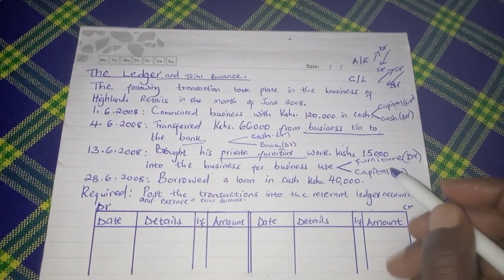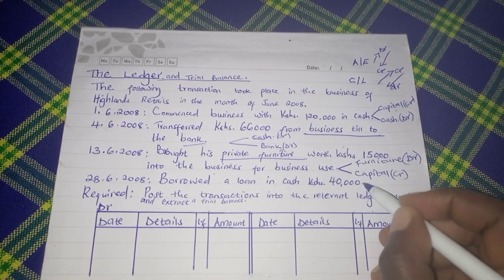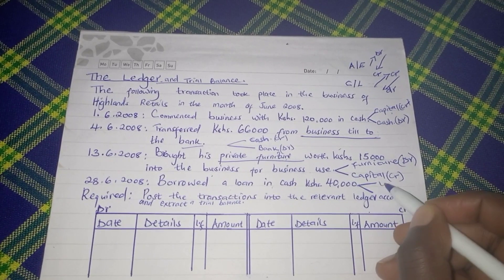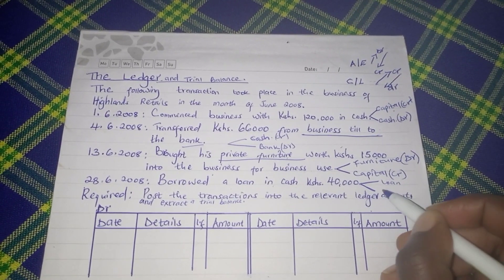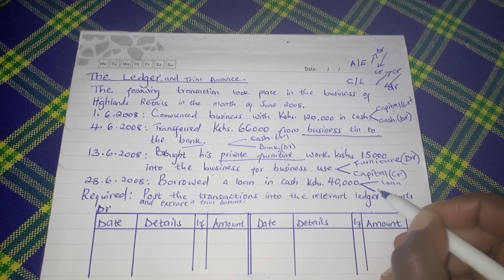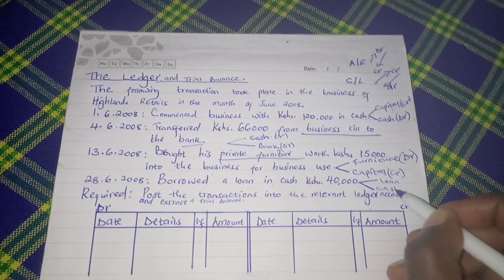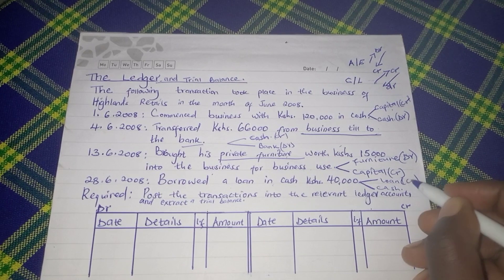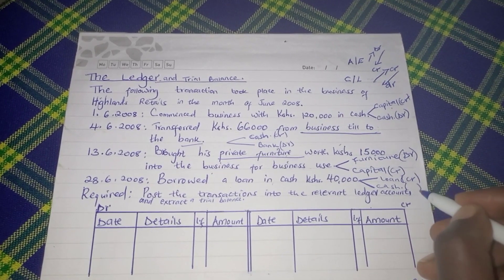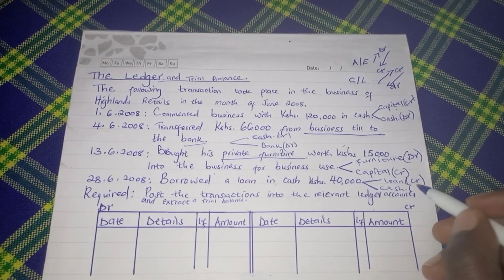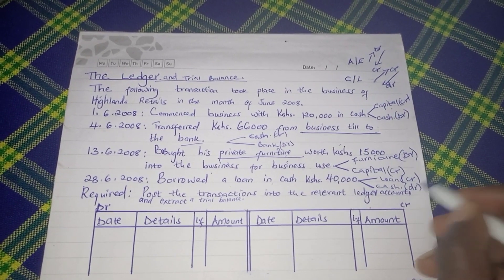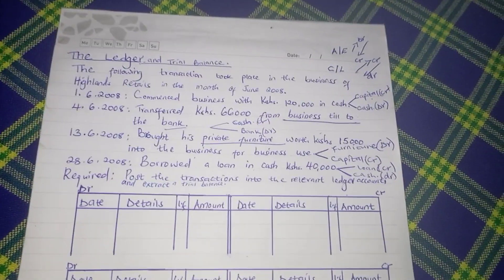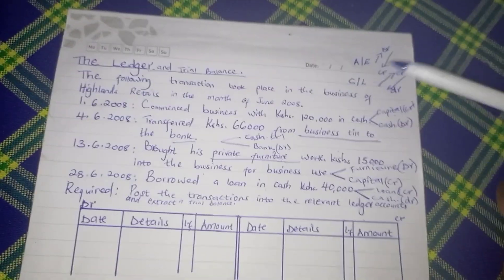Lastly, a loan was borrowed in cash of $40,000. We do not know where this loan is coming from, so we open a loan account and a cash account. Loan is a liability — an increase is credited. Cash increases by $40,000, so we debit cash. We can now open our accounts and proceed.